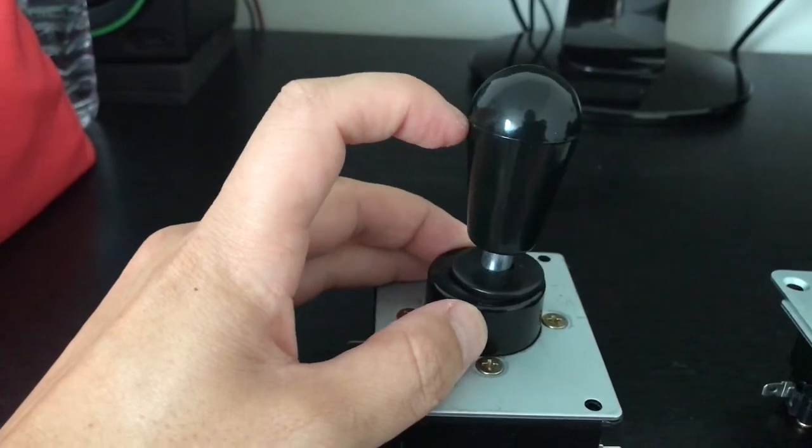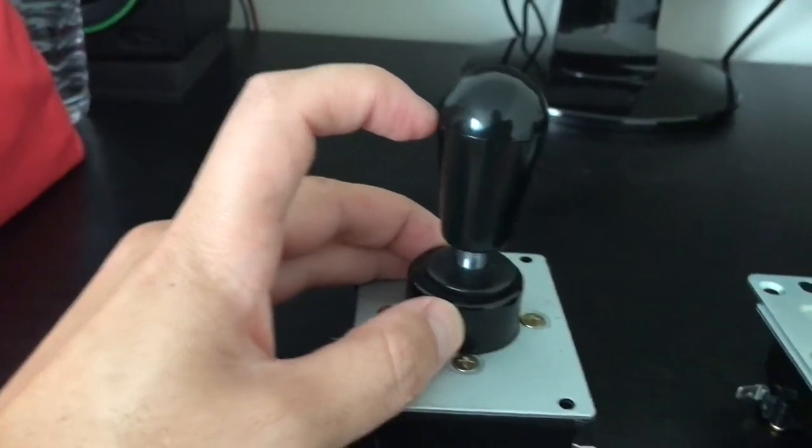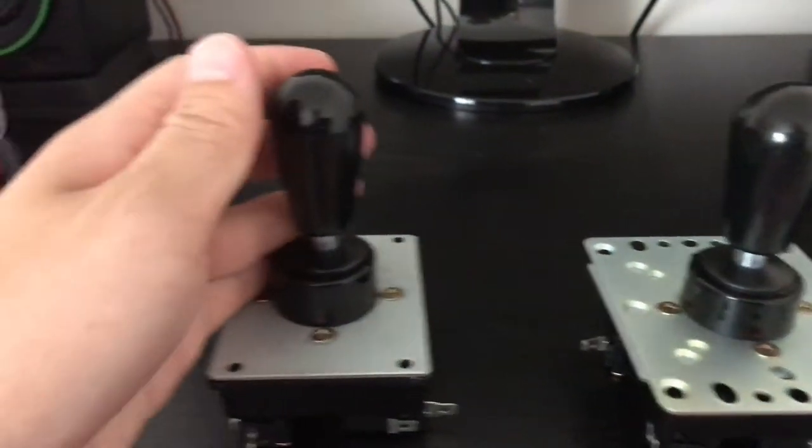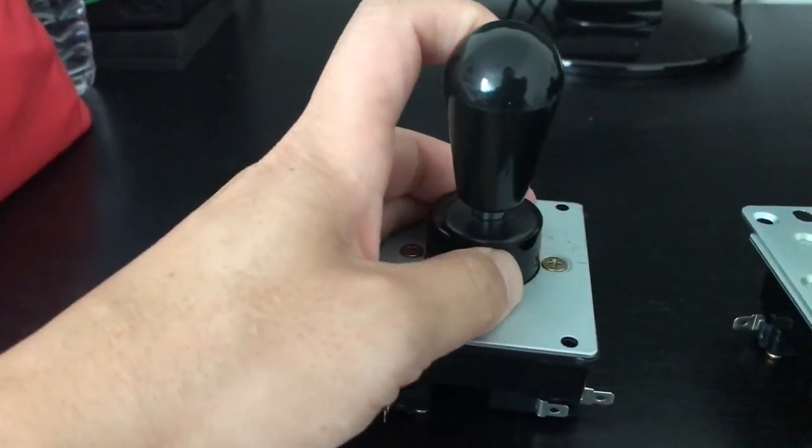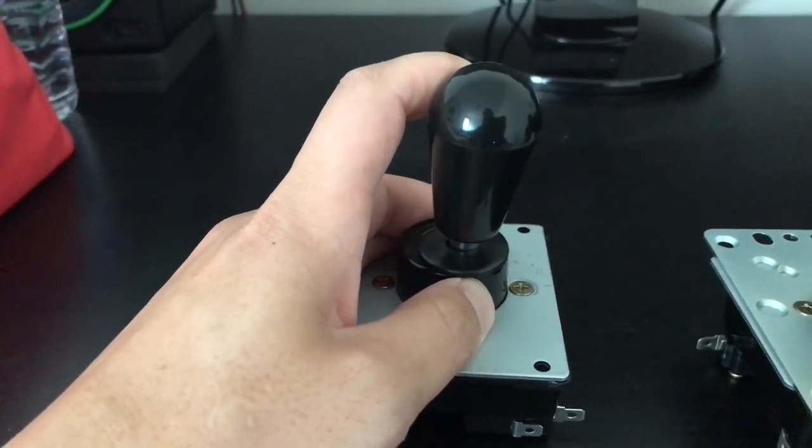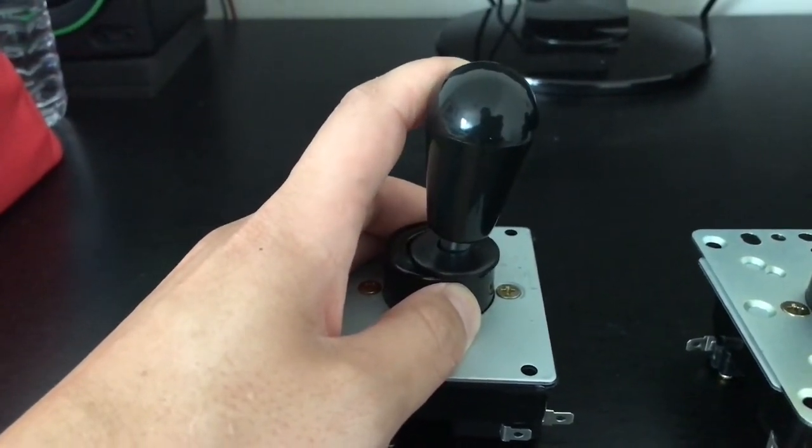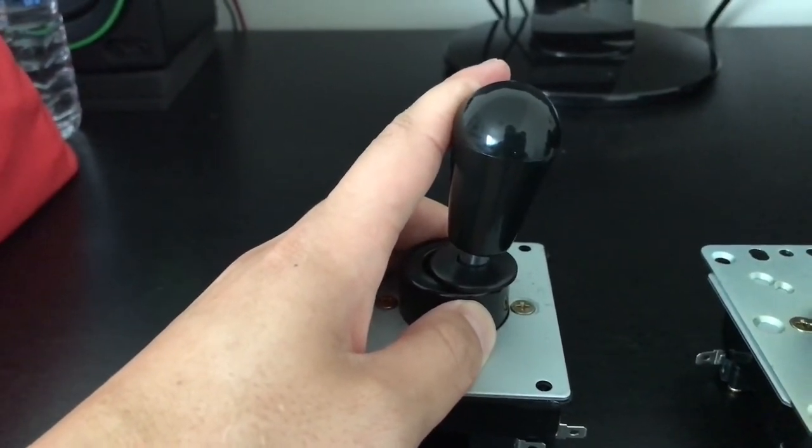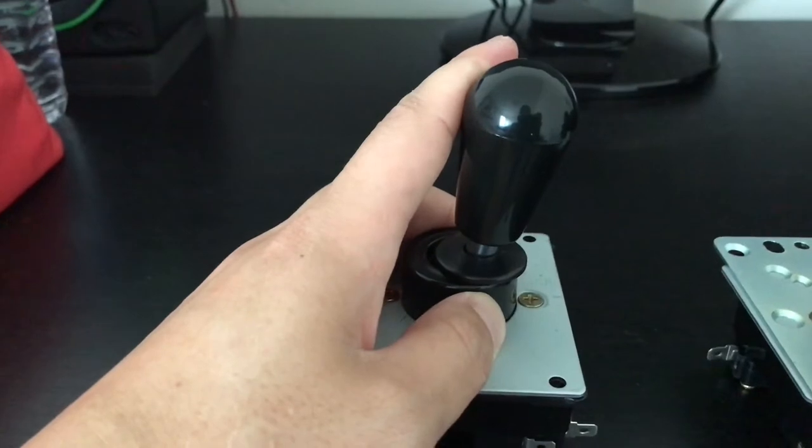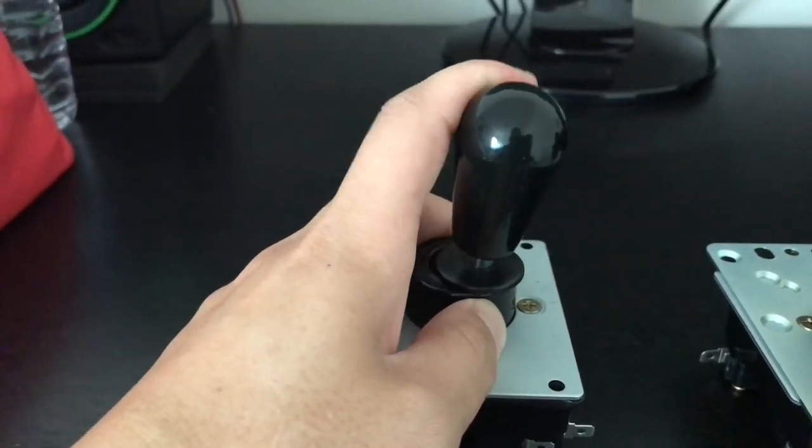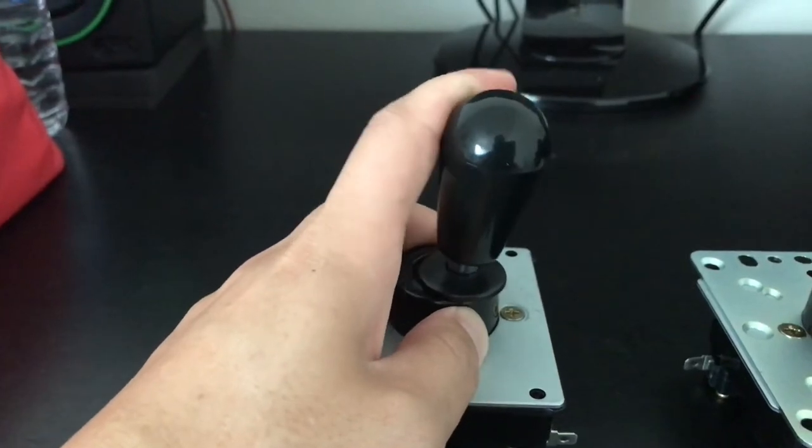See how I barely move and it initiates the switches already, compared to this one. See, further. It's kind of hard to tell, but you can feel that it's a little bit further. And then the diagonals—so if you go down, you go to right a little bit, that's when it starts the diagonal. If you go more, that's when the diagonal ends, so that would be considered a right.